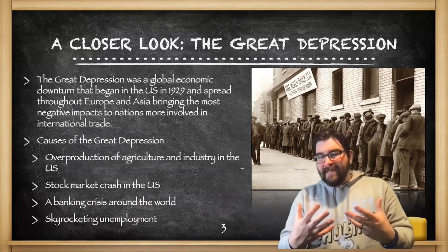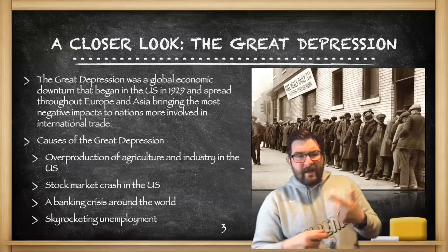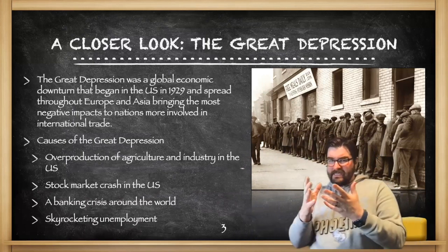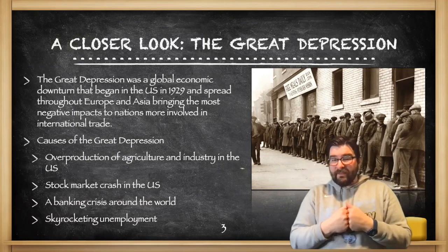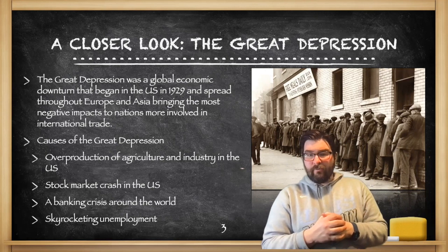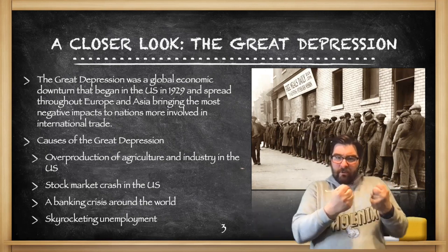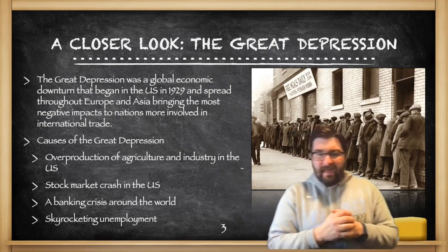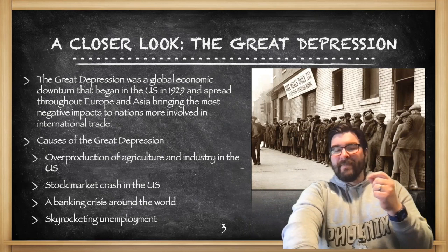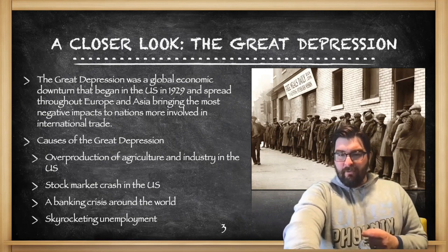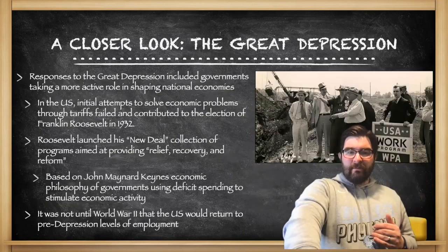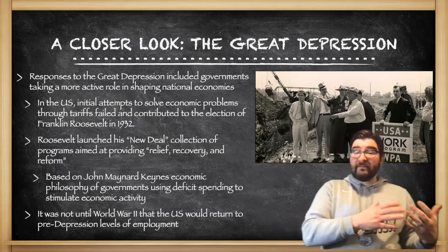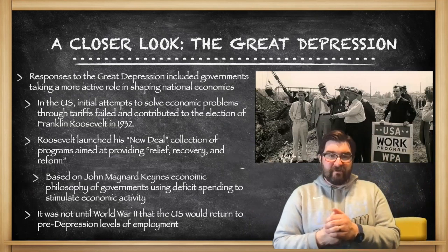The causes of the Great Depression are many — just have a couple in your back pocket. Overproduction of agriculture and industry in the United States through the late 1920s, a stock market crash in the United States, a banking crisis around the world as people tried to pull money out of banks while banks called in loans they didn't have capital on hand to cover, and skyrocketing unemployment exacerbating all of these economic problems. The responses typically include governments taking a more active role in shaping their nation's economies.